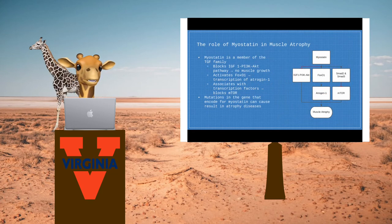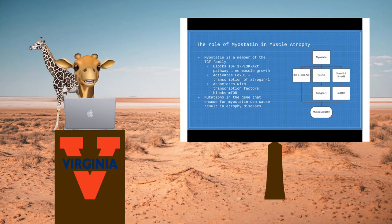Myostatin is a member of the transforming growth factor beta family. Its main role is to increase protein degradation via blockage of the IGF-1, PI3K, AKT pathway and activation of FOXO-1, which allows for the transcription of atrogen 1.